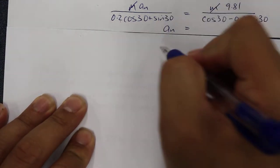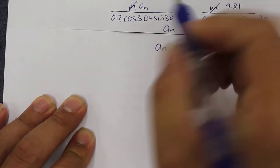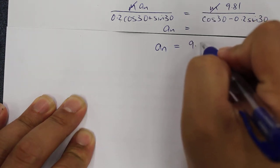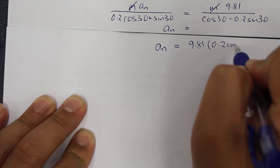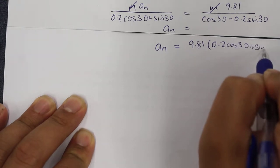The acceleration in the normal direction here will be equal to 9.81 times 0.2 times cosine 30 plus sine 30.